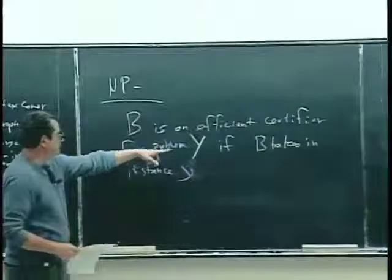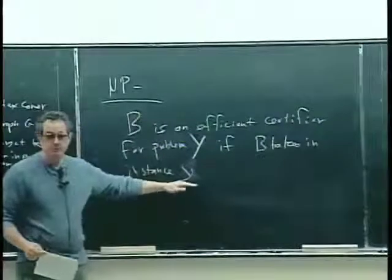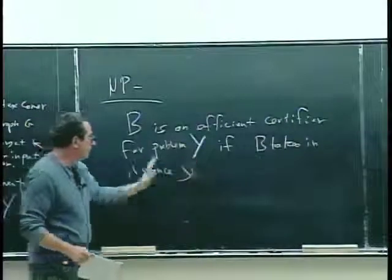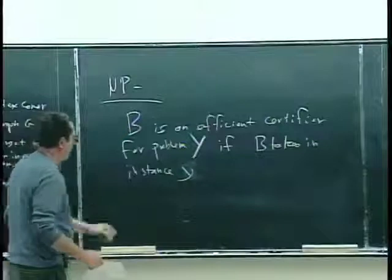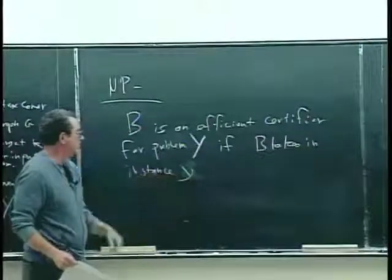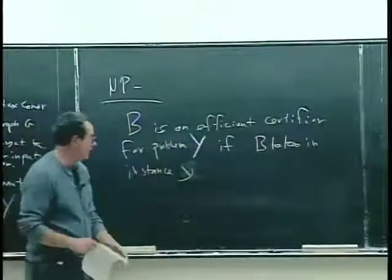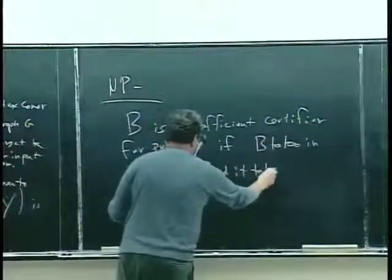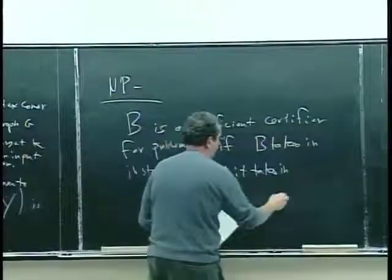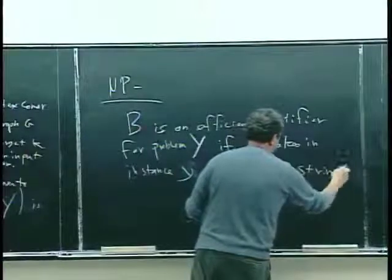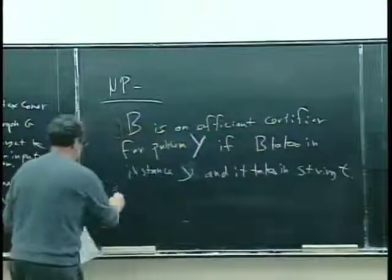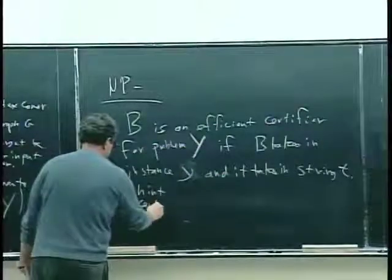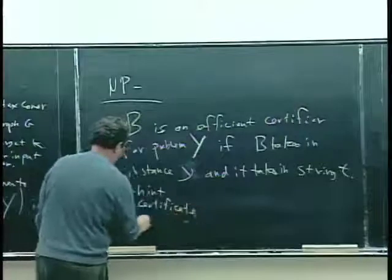A certifier doesn't answer whether little y is in capital Y directly. What a certifier does is: it takes in the instance, and it takes in a string, call it little t. That string t is sometimes called a hint, sometimes called a certificate, sometimes called a proof.